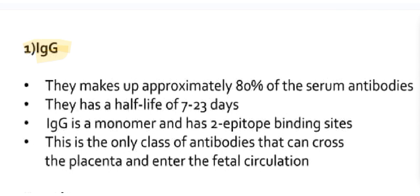Now we will see IgG. They make up approximately 80% of serum antibodies. They have a half-life of 7 to 23 days. IgG is a monomer. IgG is the only antibody that can cross the placenta and enter the fetal circulation.